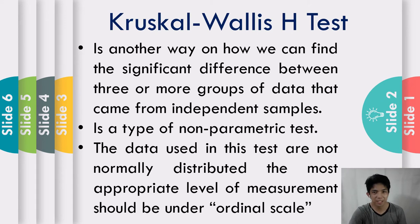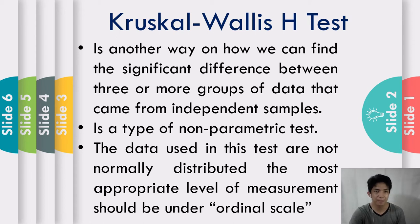The Kruskal-Wallis test, or the Kruskal-Wallis H test, is another way to find the significant difference between three or more groups of data that came from independent samples. On regular parametric statistics, you probably learned about the one-way ANOVA that tests the equality of three or more populations. The Kruskal-Wallis test is basically the non-parametric version of that test. The data used in this test are not normally distributed; therefore, the appropriate level of measurement should be under ordinal scale.